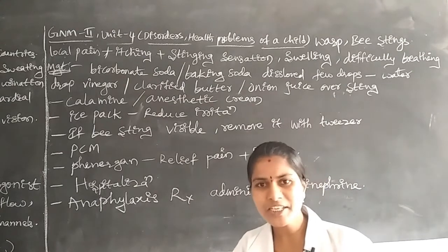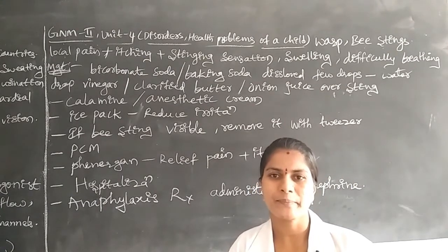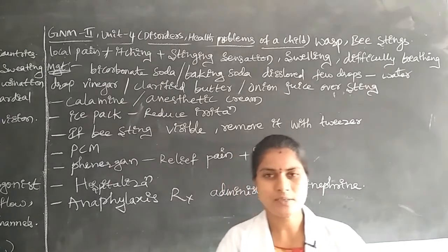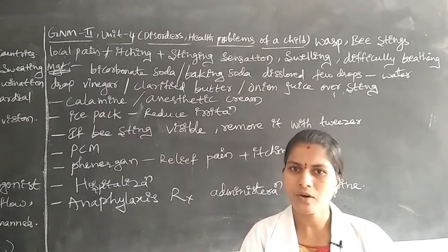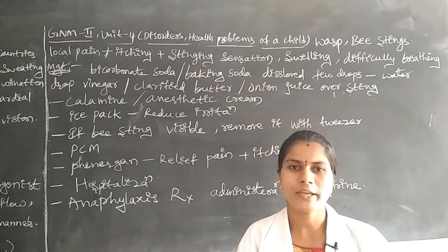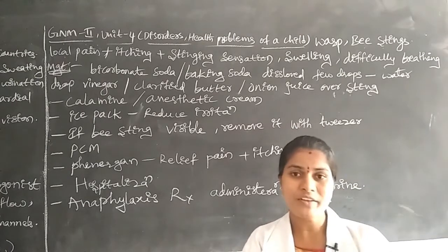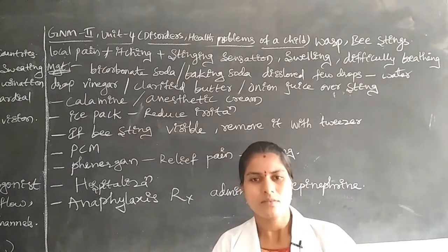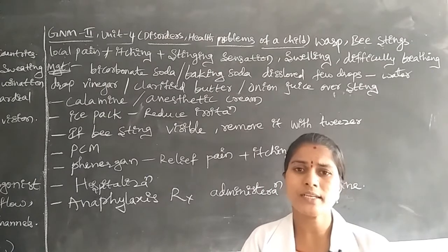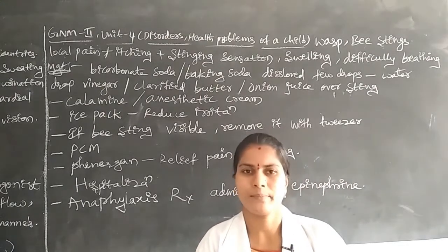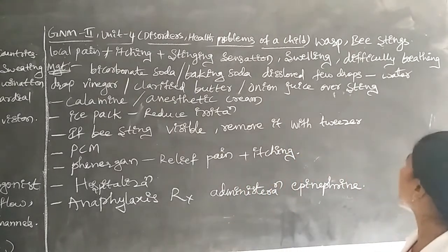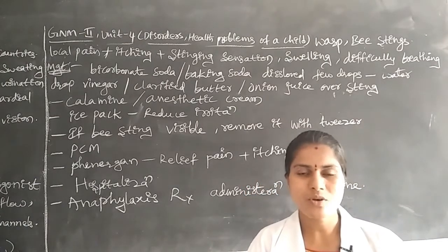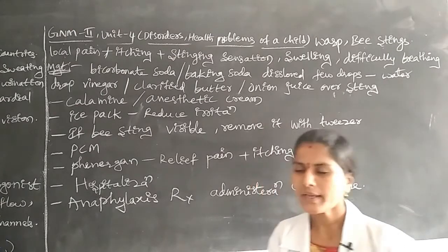Sometimes in this condition the child may also have difficulty in breathing. In a normal individual, breathing, circulation, and temperature are all normal. Once these change — breathing, circulation, or temperature — the child may have complications. By addressing these problems, the child will become healthy and normal. These are the symptoms identified when a child undergoes bee or wasp stings.